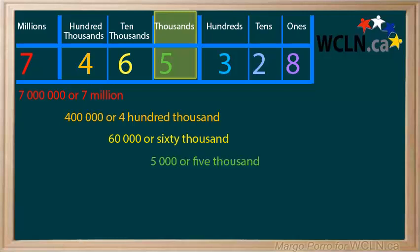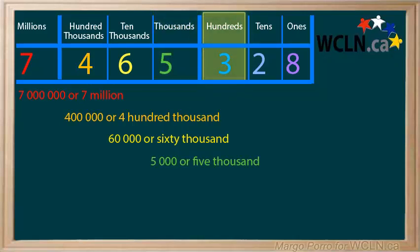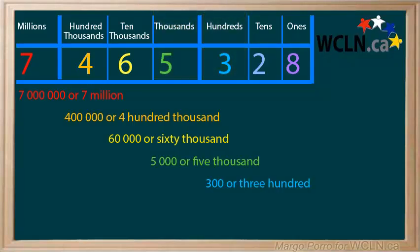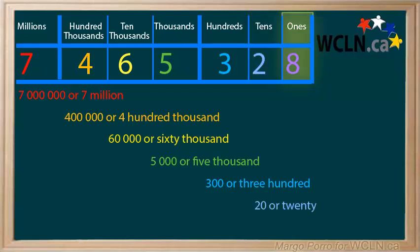This pattern continues. The 3 is in the hundreds place and is worth 300. The 2 is in the tens place and is valued at 20. The 8 is in the ones place, so it is simply worth 8.